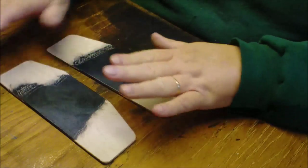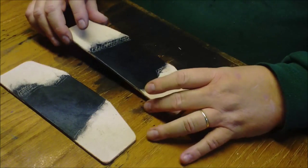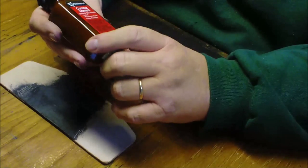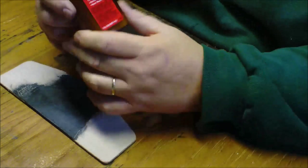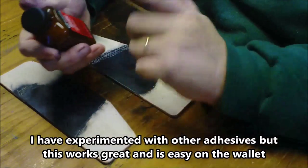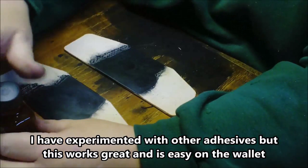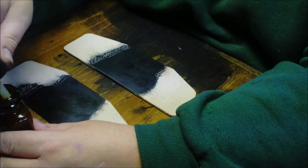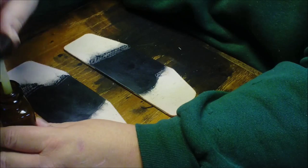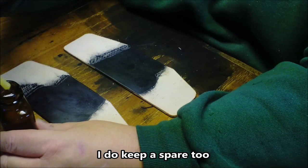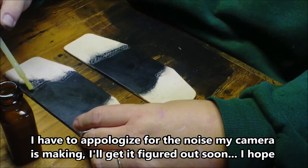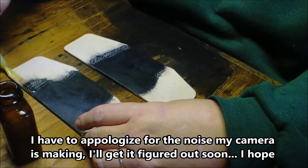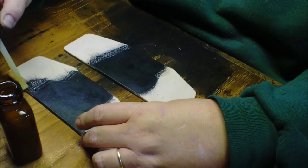So we're just going to take and apply glue to both sides. And again, it's just my usual. I tend to like the smaller bottles as opposed to the big tubs of it because that's just easier to handle. And just brush it on. I take it all the way to the edge.